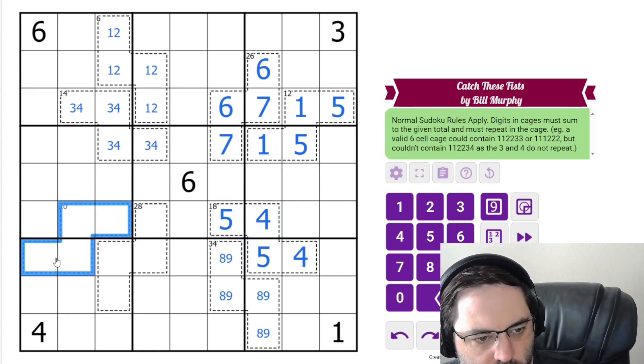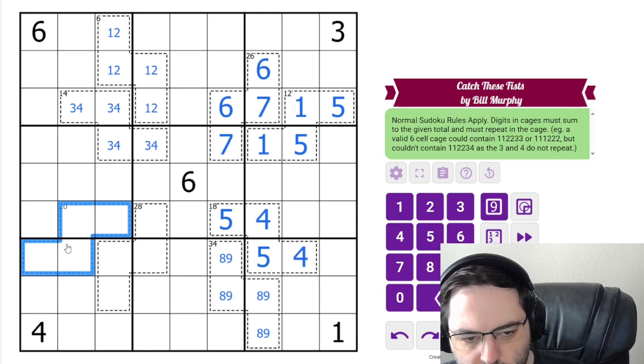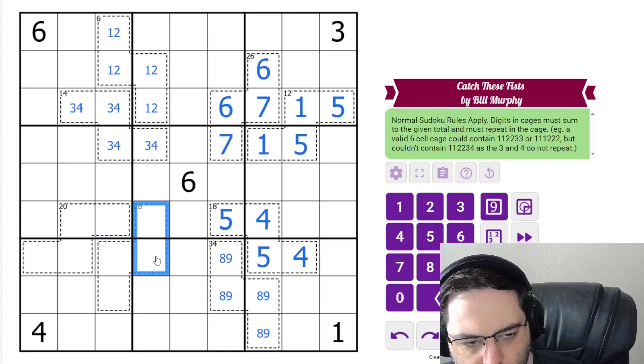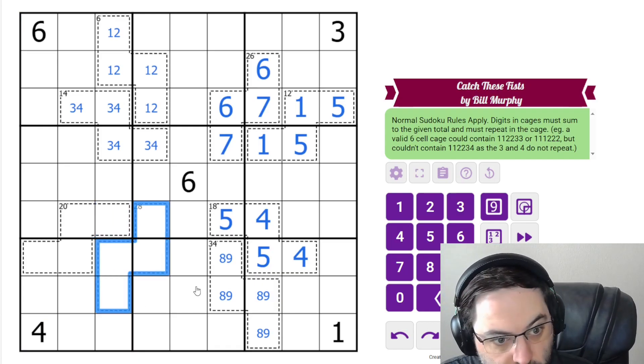What about the 20? The 20 is not quite as restricted yet. This can't be one or two, and we also can't have four or six in the cage. Let's come back to that. We can resolve the 28 first, I think.